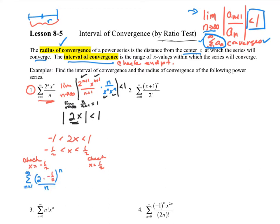I started writing this out, taking the original series and plugging in x equal to negative 1 half. When I look at multiplying 2 to the n and negative 1 half to the n together, I get negative 1 to the nth power all over n. That's an alternating series with a harmonic term. The limit as n goes to infinity of 1 over n equals 0, and the absolute value of the terms decreases. Therefore, it converges by the alternating series test.